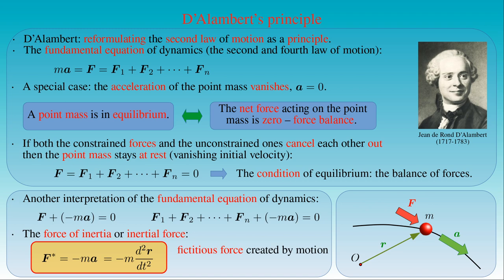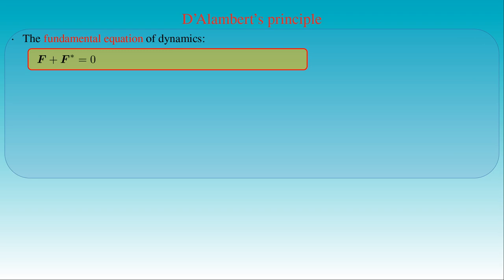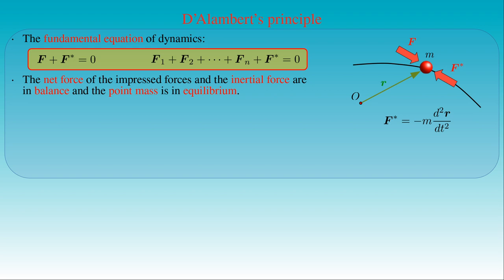We must remember that the concept of force is introduced for effects changing the state of motion of bodies — that is, forces are the cause of motion, not the product of it. The fundamental equation written in the form stating that the net force f plus the inertial force f* vanishes — f1 plus f2 plus ... plus fn plus f* equals zero — means that the net force f of the impressed forces and the inertial force f* defined by minus m times the second-order time derivative of r are balanced, and the point mass is in equilibrium.